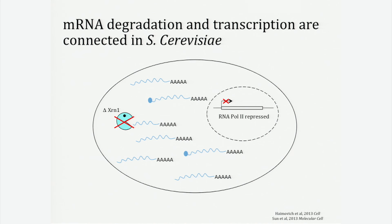We actually weren't the first to think of this question. A couple of groups working on this idea in yeast found that gene expression isn't actually the linear process we normally think of — instead, there's a very interconnected relationship between transcription and degradation. They knocked out certain decay factors, which impaired the mRNA decay pathway and slowed it down, creating an abundance of mRNAs in the cytoplasm. And they saw a corresponding decrease in the rate of transcription in the nucleus, suggesting these cells were able to sense the overall abundance of mRNAs and buffer those levels.